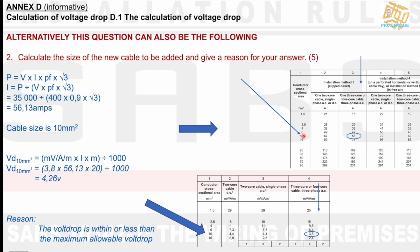I then take that cable size and go and inject it into another table, or use another table for my millivolt per amp per meter. I then get the 3.8 value, and I put that into a formula, and I get to a voltage drop of 4.26 volts. Both these answers are not bad. I say the reason for the alternative is the voltage drop is within or less than the maximum allowable voltage drop. So at the end of the day, I got to the same size cable, and I got to the same answer for the alternative formula.